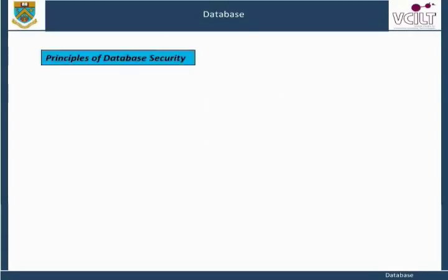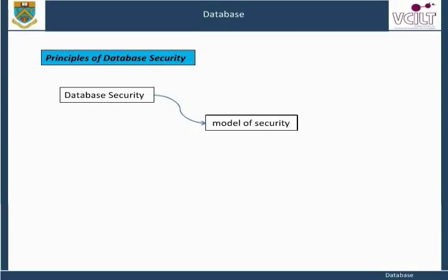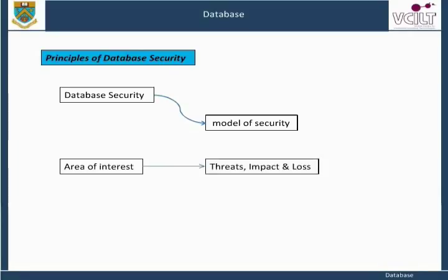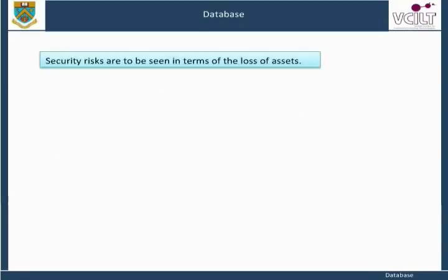To structure thoughts on security, you need a model of security. These come in various forms that depend on roles, degree of detail, and purpose. The major categories are areas of interest, threats, impact, and loss, as well as the actions involved in dealing with them. Security risks are to be seen in terms of loss of assets.